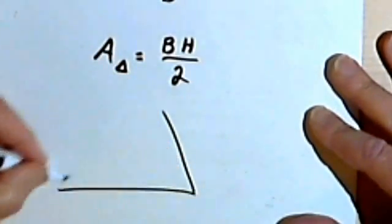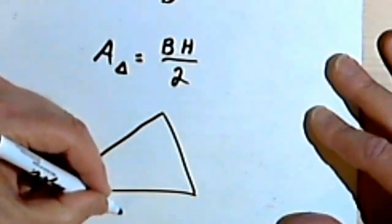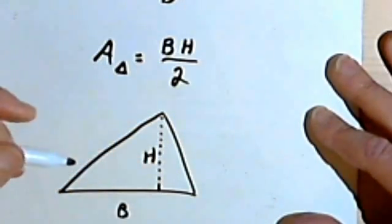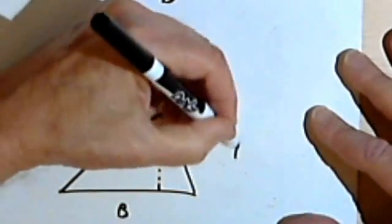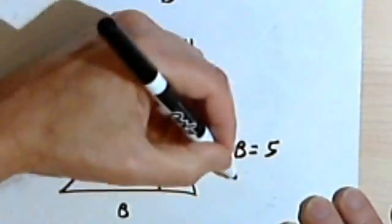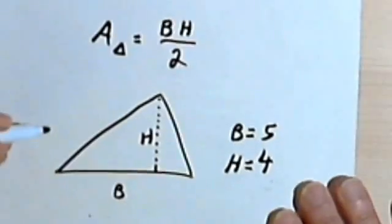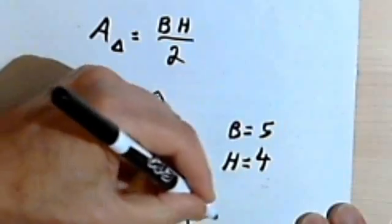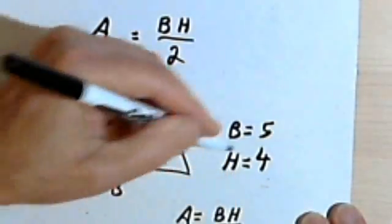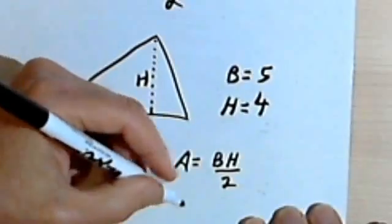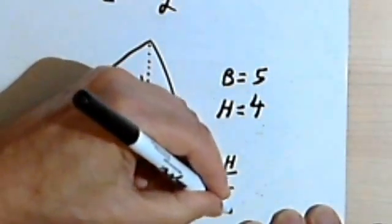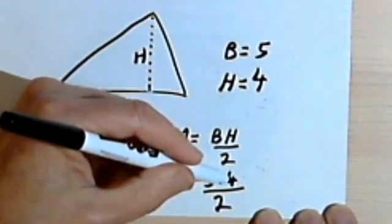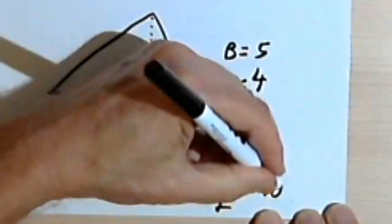So if I've got a triangle shaped like this, and I'm given its base and its height — let's say the base equals 5 and the height is 4 — I just take my formula: area equals base times height over 2. Plugging in the numbers: area equals 5 times 4 over 2. 5 times 4 is 20, and 20 divided by 2 is 10, so the area would be 10.